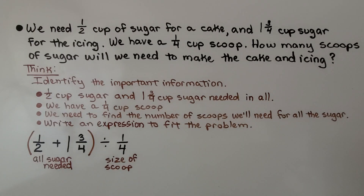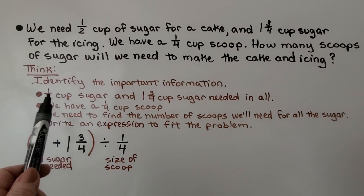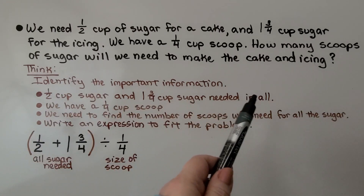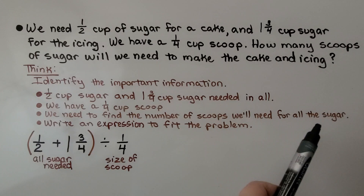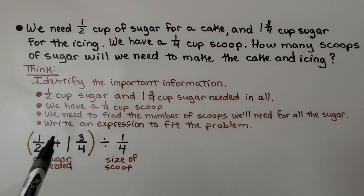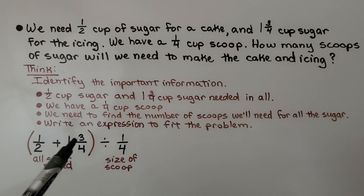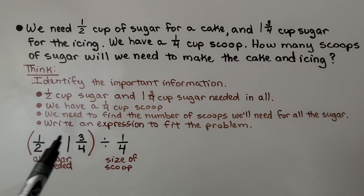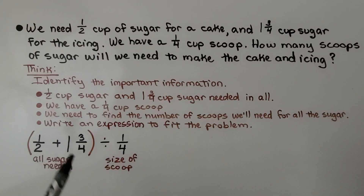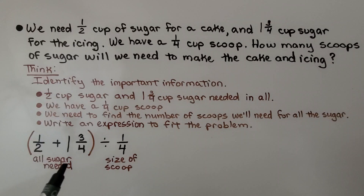We identify the important information: one half cup sugar and one and three fourths cup sugar needed in all; we have a one fourth cup scoop; we need to find the number of scoops for all the sugar. We can write an expression: we need one half cup for the cake plus one and three fourths for the icing — this is all the sugar needed. We put this sum in parentheses, then divide by one fourth, the size of the scoop.